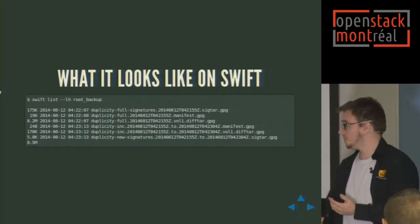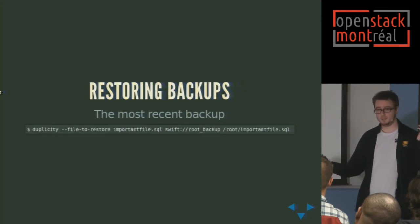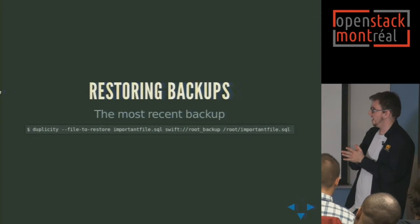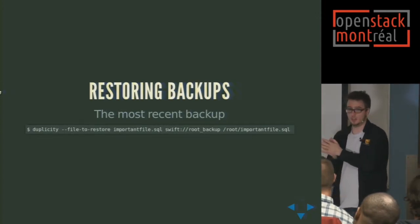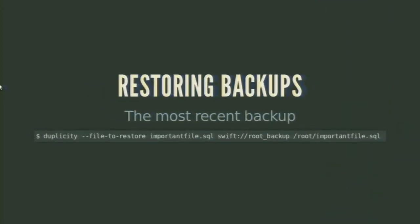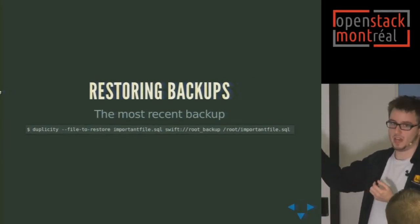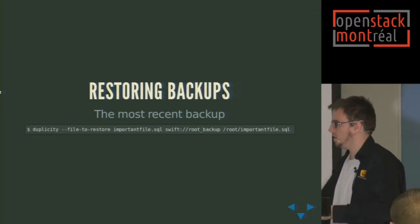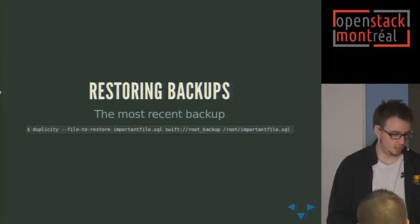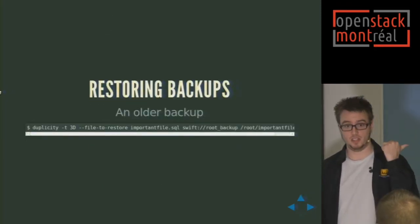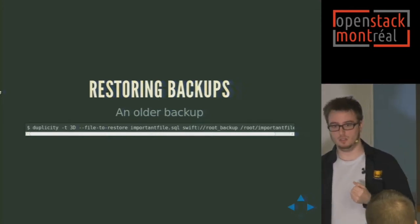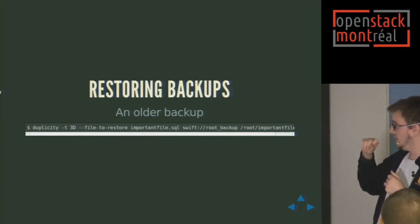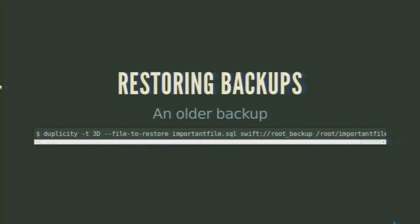So if you do backups every day, it's just going to back up what changed that day. If you want to restore backups, it's actually really simple. You call the Duplicity command line, tell it you want to restore a file — say this very important SQL file that I deleted. You tell it where the file is in Swift, the root backup container in Swift, and where you want to restore it — back to its original location at /root/important_file.sql. That's how you restore the most recent version. But if you want the version from three days ago because it changed in the meantime, Duplicity allows that — just add a time parameter to restore an older version of the file.